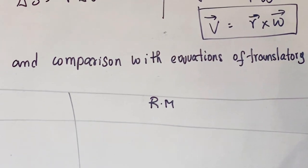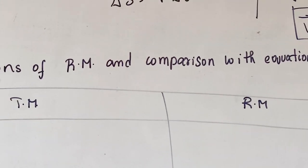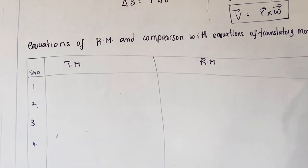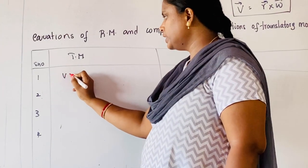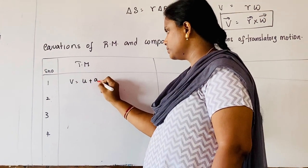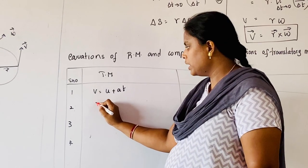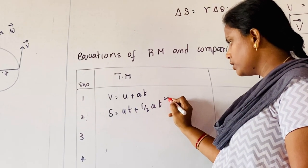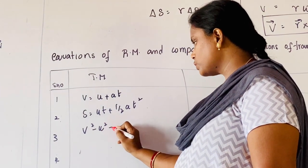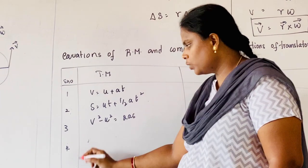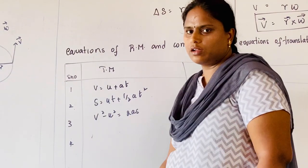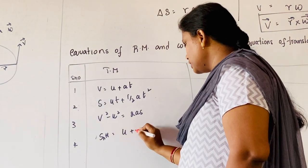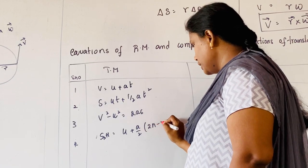Now we are going to see the equations of rotatory motion and compare them with the equations of translatory motion. The equations of translatory motion are: first, v equals u plus at; second, s equals ut plus half at-squared; third, v-squared minus u-squared equals 2as; and fourth, the distance traveled in the nth second: S-nth equals u plus (a/2) times (2n minus 1).